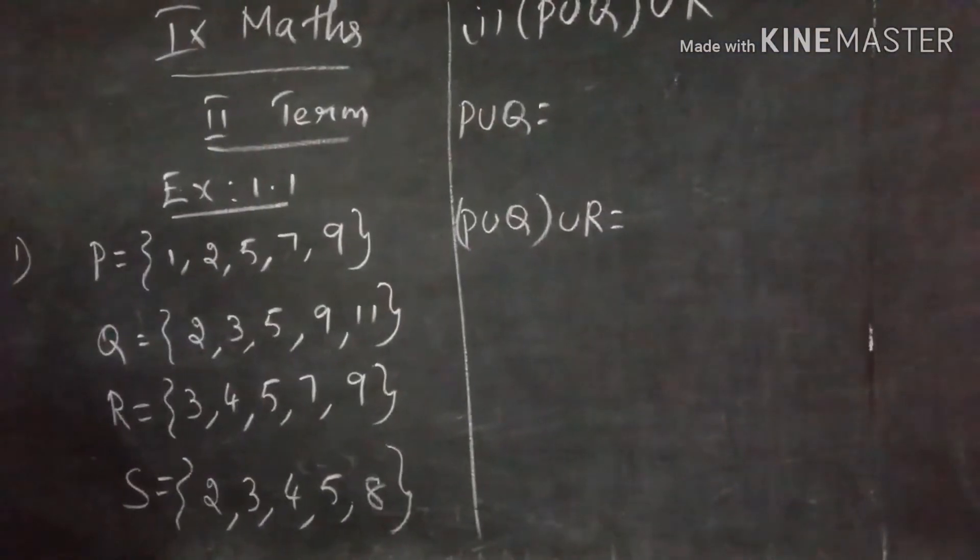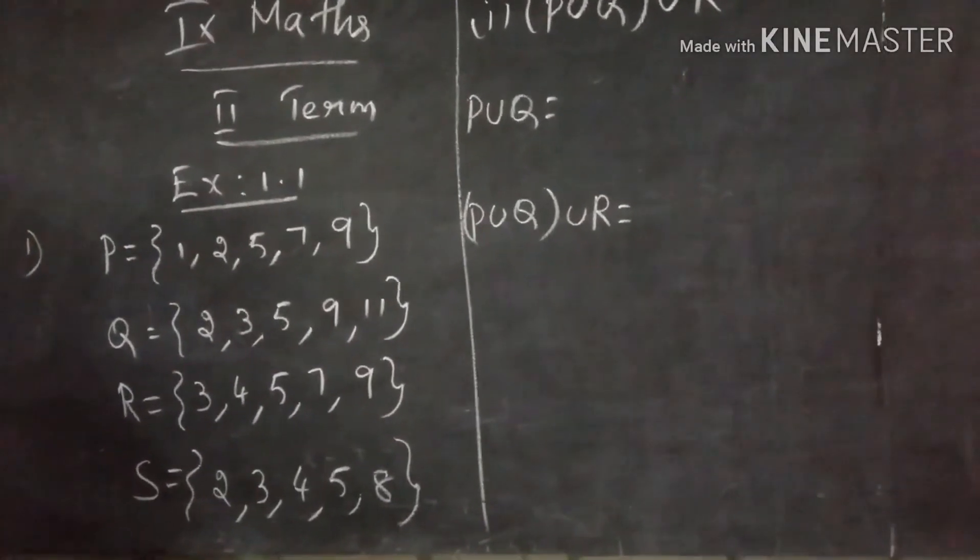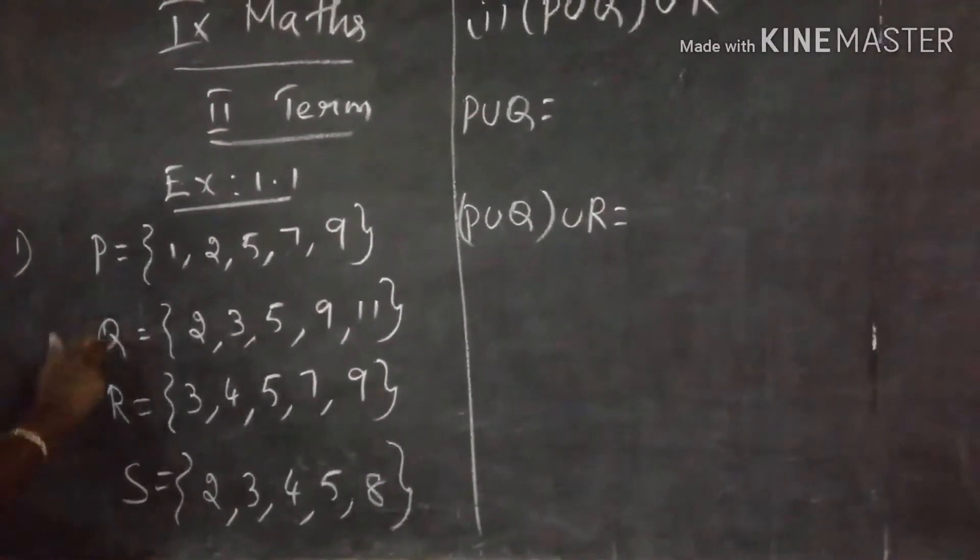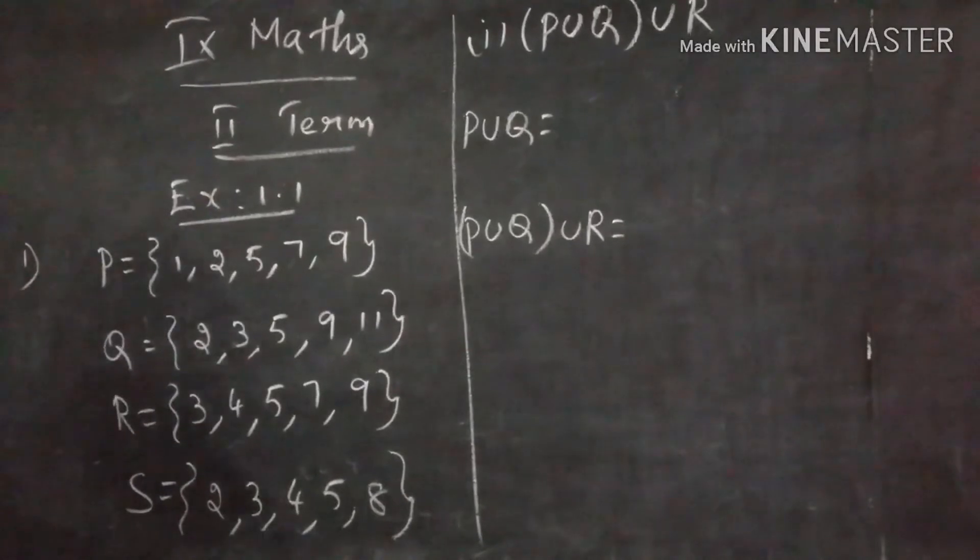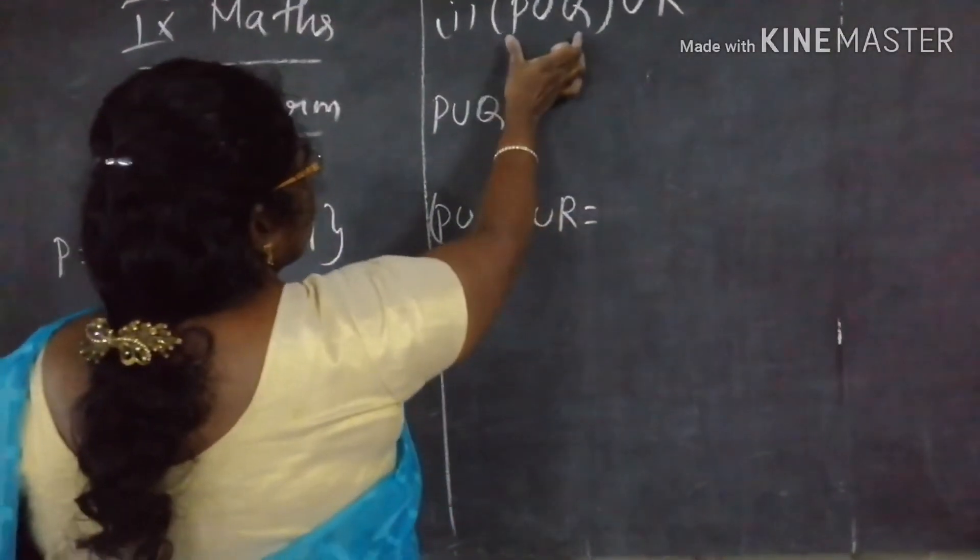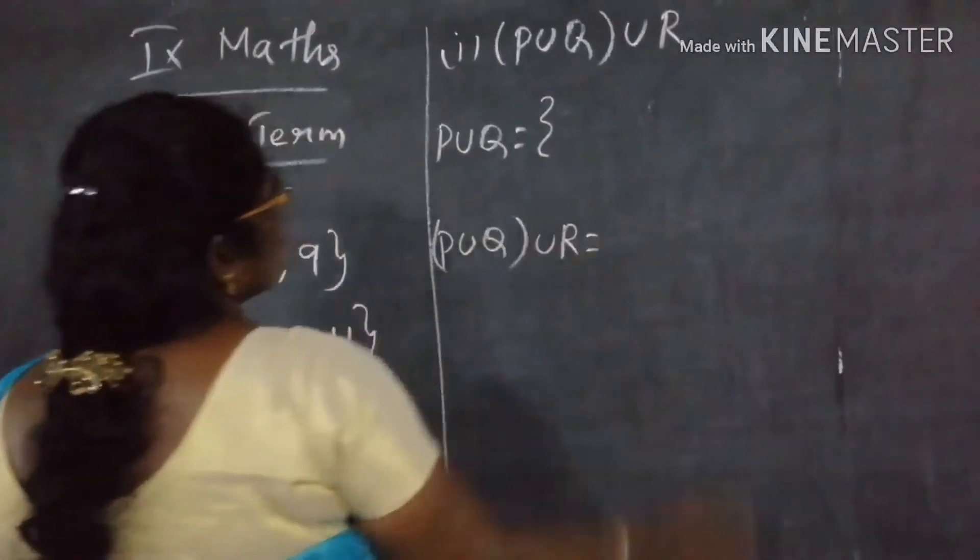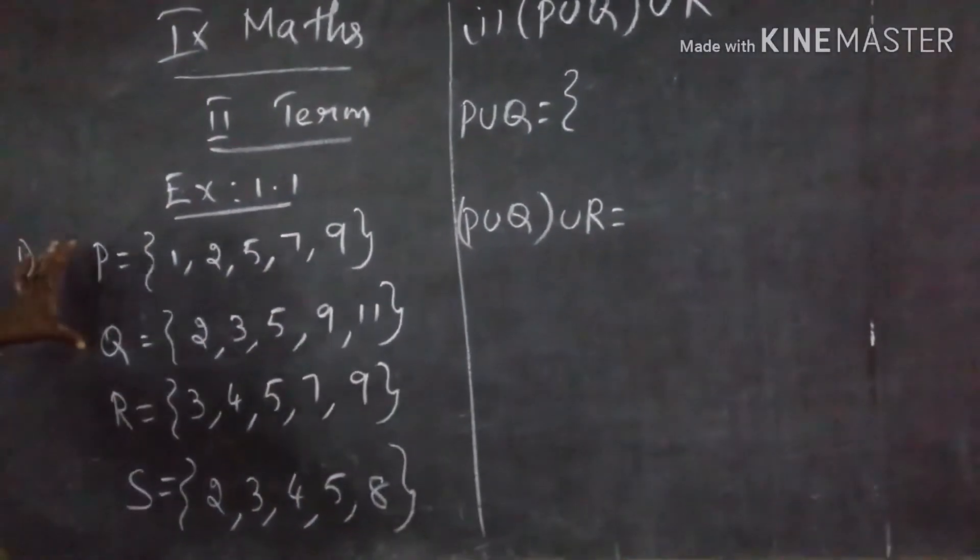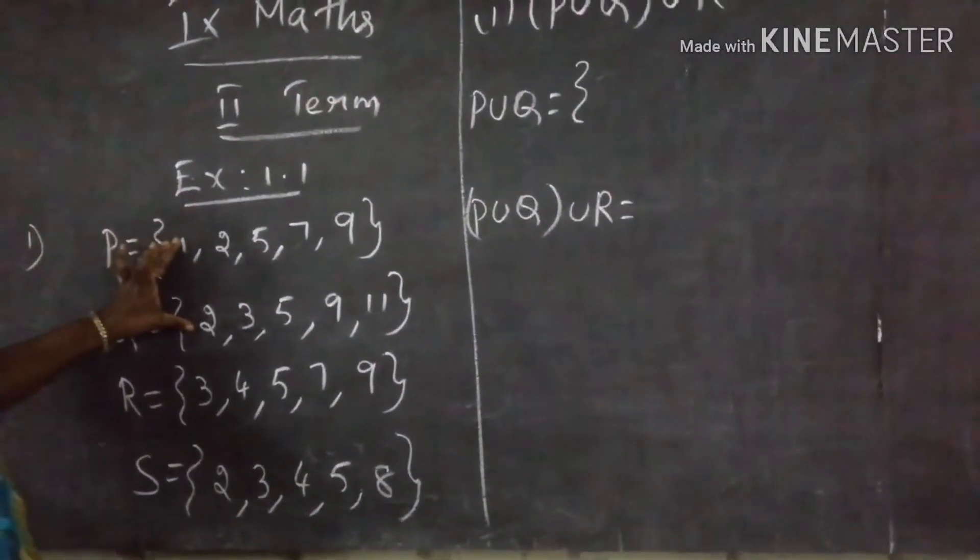9th math, 2nd term, first problem. Given P, Q, R, S, we want to find out P union Q union R. First find P union Q. P and Q, all numbers are in order.